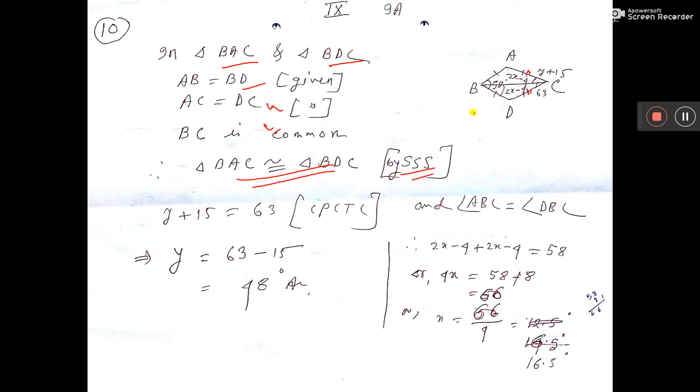Now see, we can tell here it is given this Y plus 15, that is this angle, and this angle 63 given. Since two sides are equal, so we can tell this angle equal to this angle by CPCTC. So it is written. Y plus 15 equals 63, you take that side, so you are getting the value of Y equals 48.